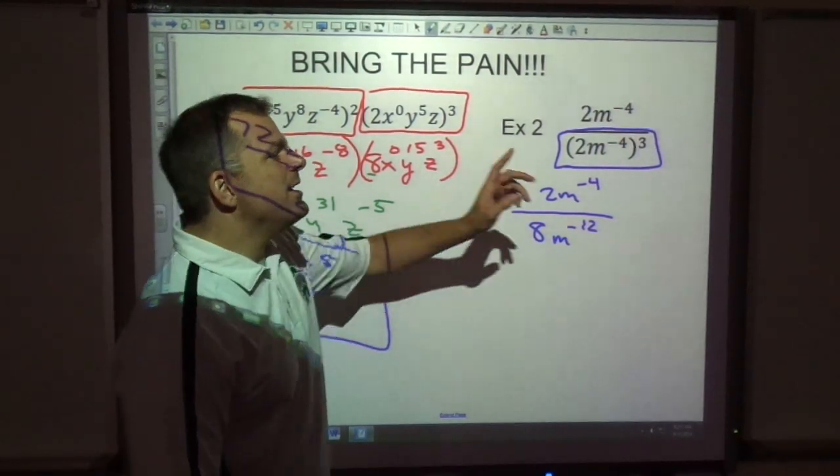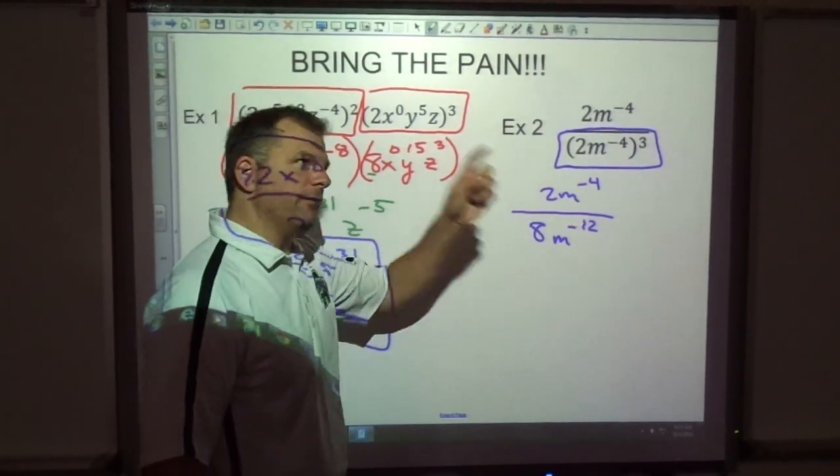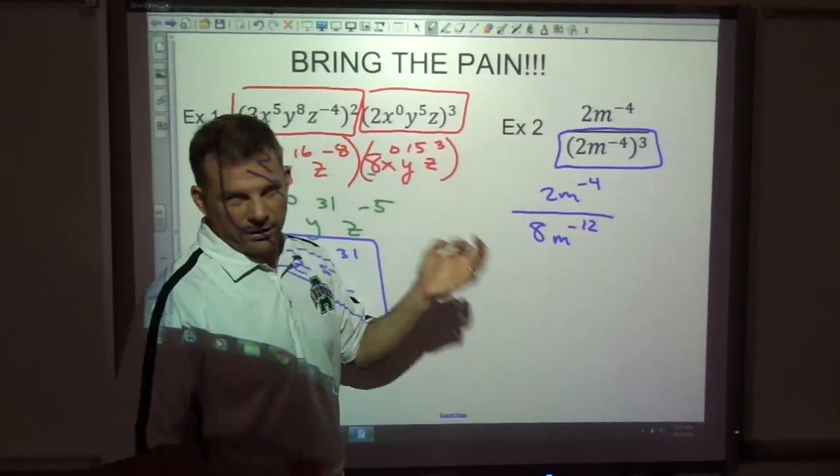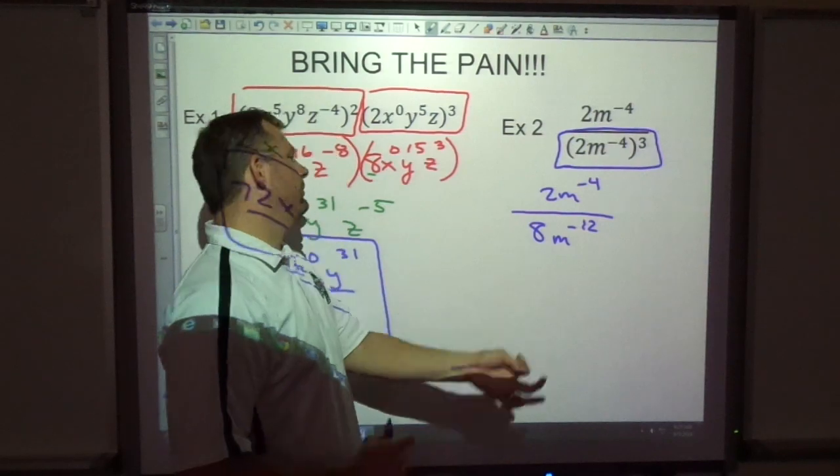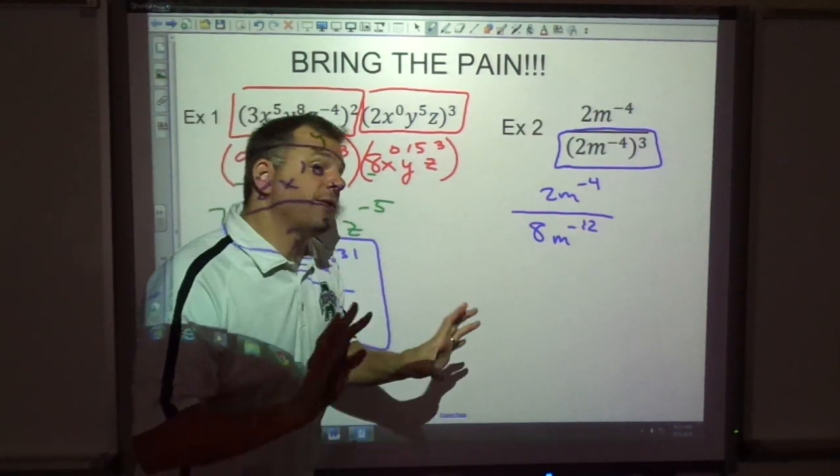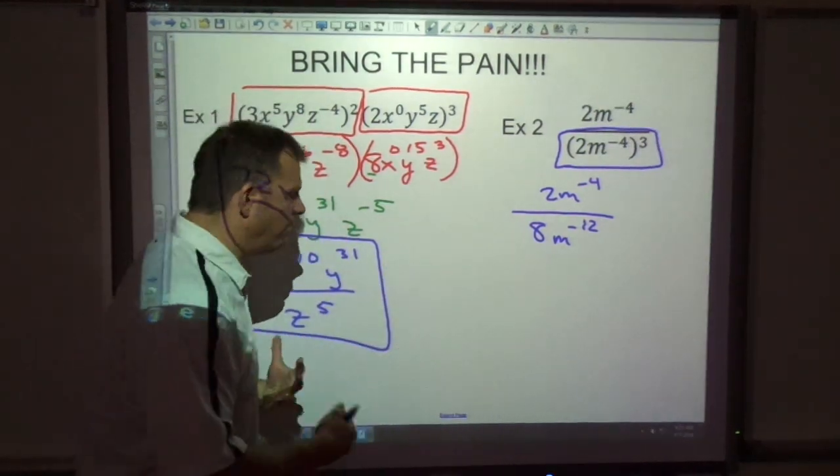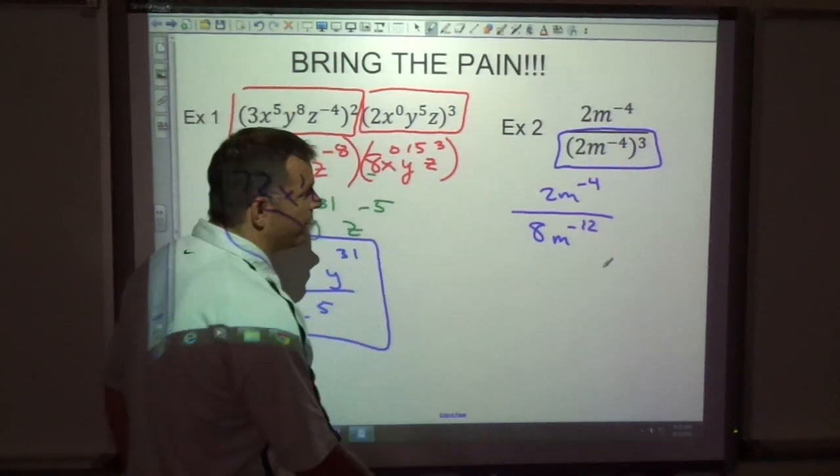Now there's a couple ways we can deal with this. You could think, okay, negative 4 minus negative 12, minus a negative is really plus a positive, so it's like negative 4 plus 12, which is probably going to be 8. You can think that way, that's fine. That works. I don't like thinking that way. It's too confusing for me. I'm not that smart.